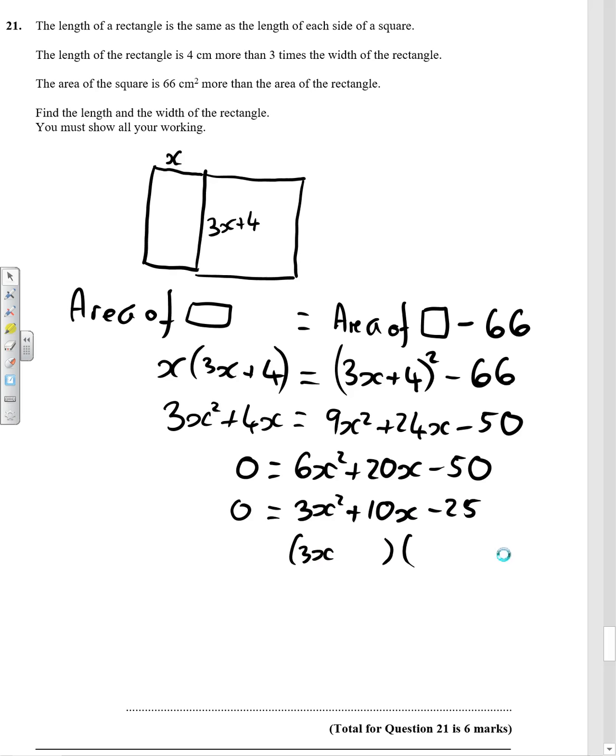Well, 25, it's going to be 5 times 5. One of them's got to be negative, but this is positive. So if we make this one positive, this one negative, that gives us the minus 25, but it gives us the plus 10 as well.